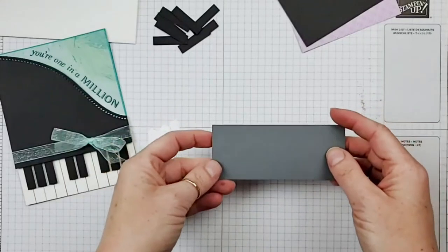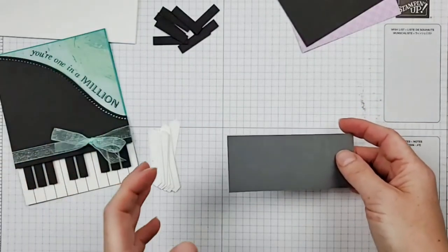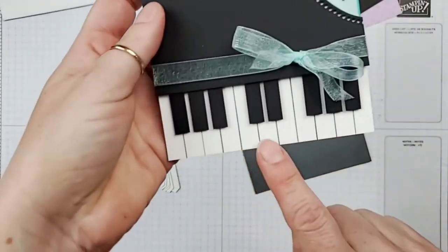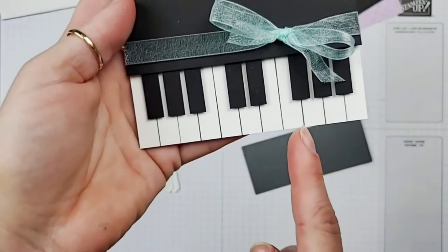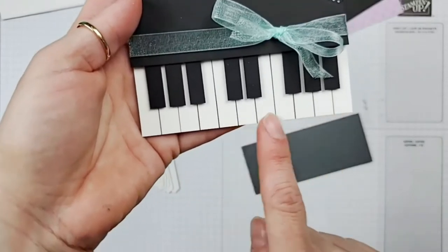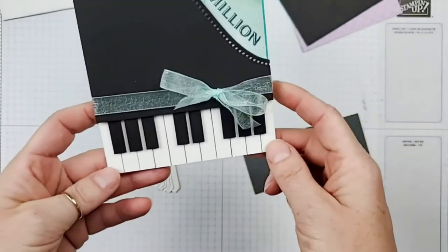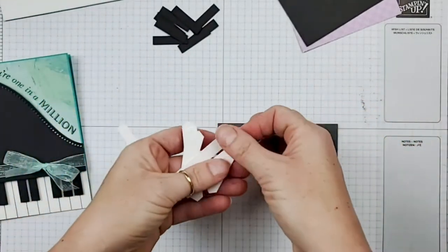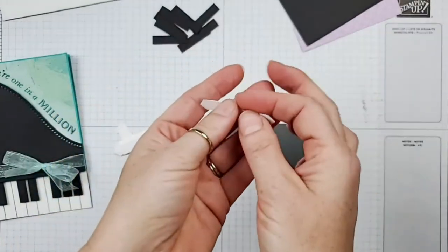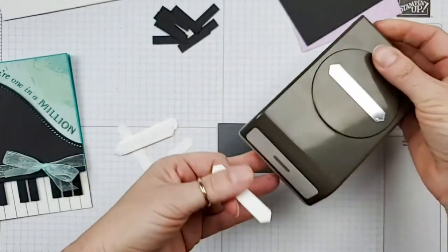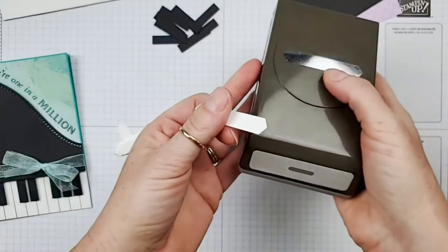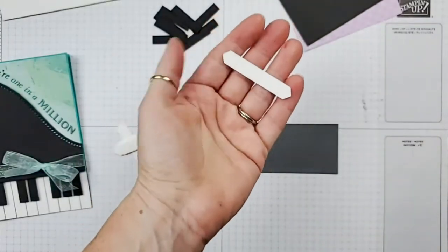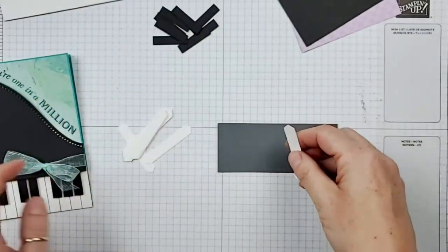So basic white card base starting at eight and a half by five and a half, folded in half to make it four and a quarter by five and a half. I'm going to show you the basic piano keyboard portion of this card. So I started here with a piece of basic gray card stock. This measures one and three quarters by four and a quarter.